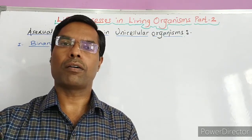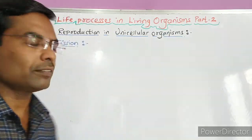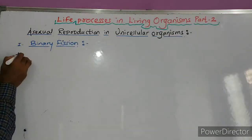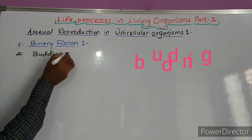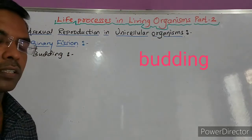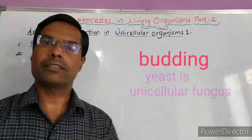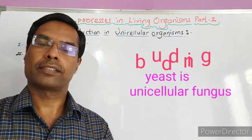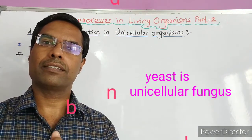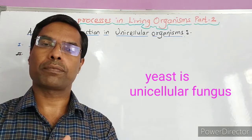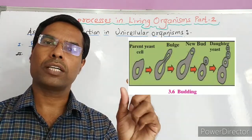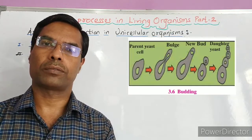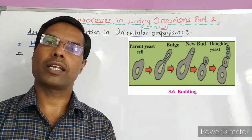The second method of reproduction in asexual organisms is budding. What happens in budding? Budding is found in yeast. Yeast is a unicellular fungus and what happens in yeast is that a small outgrowth is formed on its outer surface, and that is called the bud.